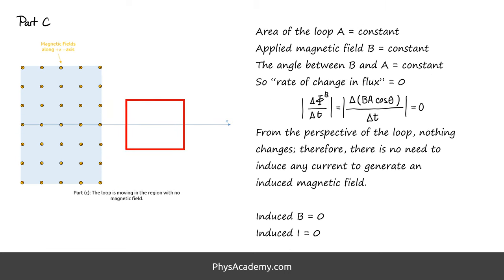Part C is similar to part A. As you see in this animation, nothing changes from the perspective of the loop. The magnetic field remains zero the whole time. The area and the direction of the loop are constant too, so there is no change. Therefore, there is no induction.